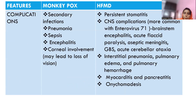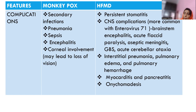Monkeypox carries a higher risk of complications including secondary infections, pneumonia, sepsis, encephalitis, and corneal involvement that can lead to loss of vision. Hand foot mouth disease is generally uncomplicated, but rare complications include persistent stomatitis leading to dehydration, CNS complications — especially with enterovirus A71 — such as brainstem encephalitis, acute flaccid paralysis, aseptic meningitis, Guillain-Barré syndrome, and acute cerebellar ataxia. Rare complications also include interstitial pneumonia, pulmonary edema, pulmonary hemorrhage, myocarditis, pancreatitis, and onychomadesis — the peeling and falling off of nails.